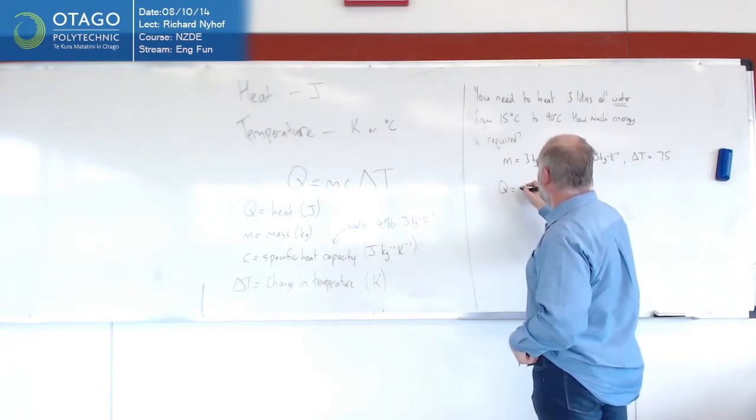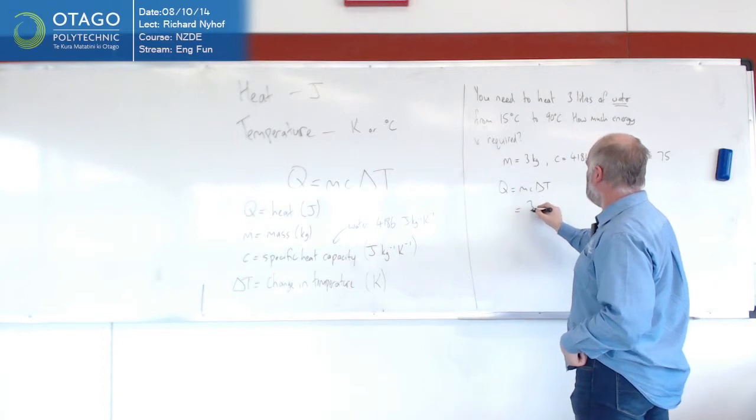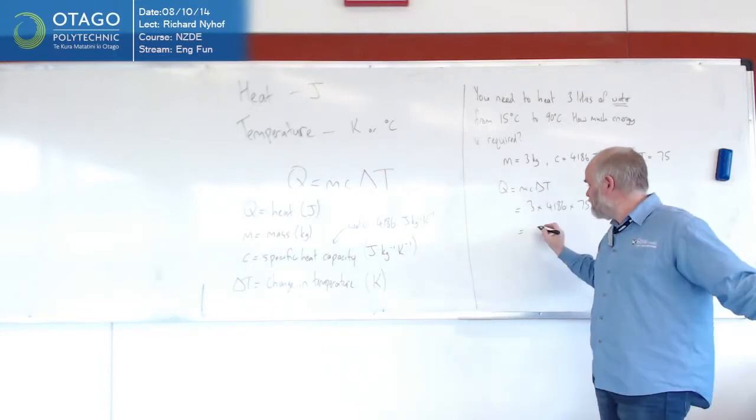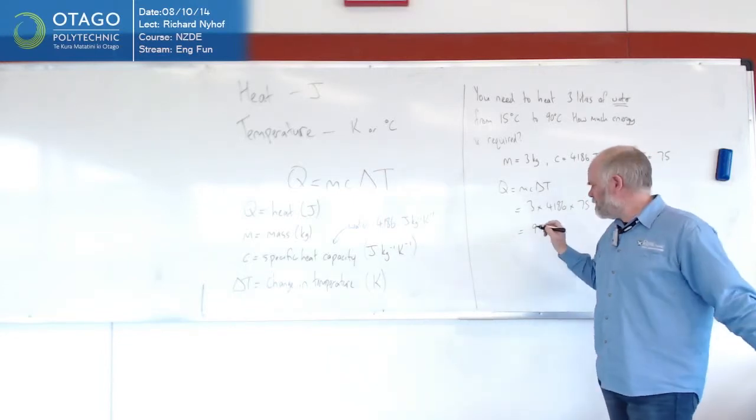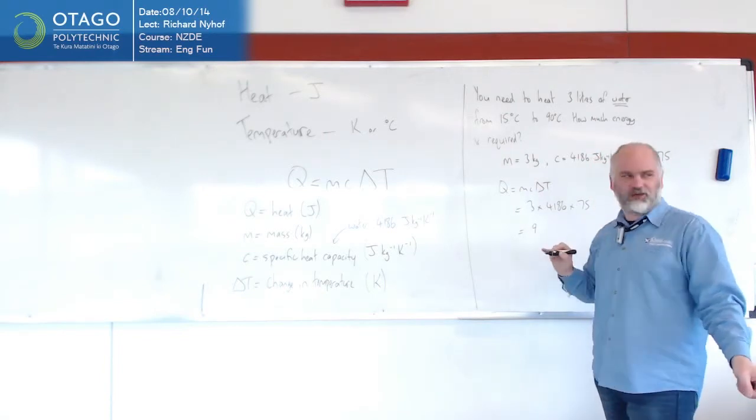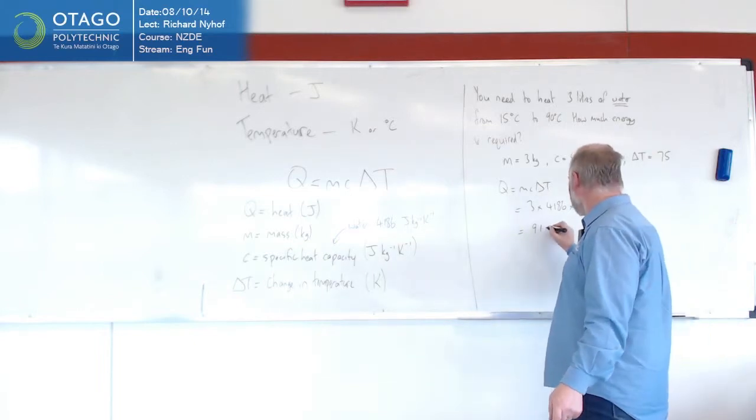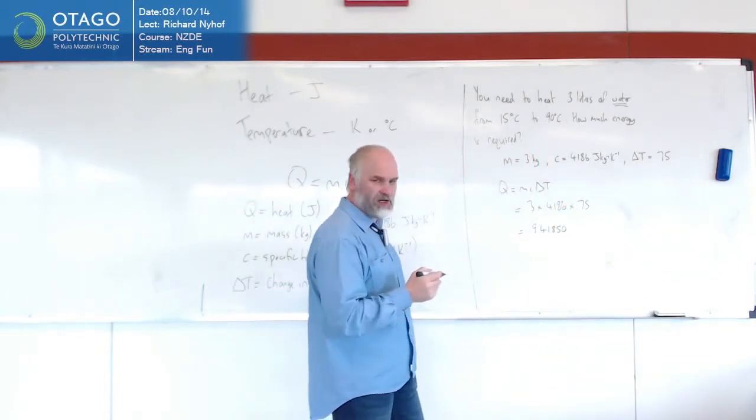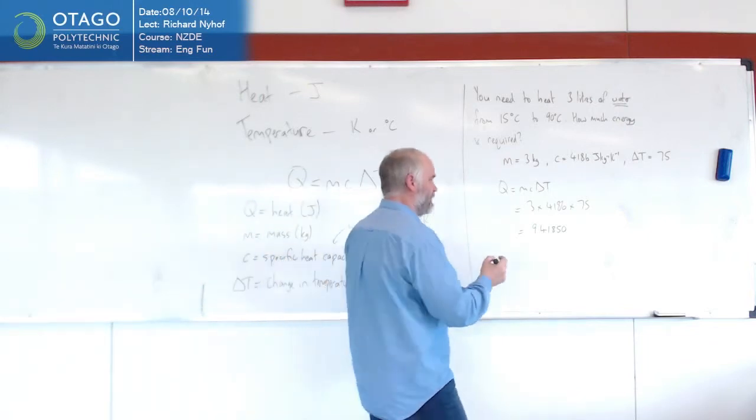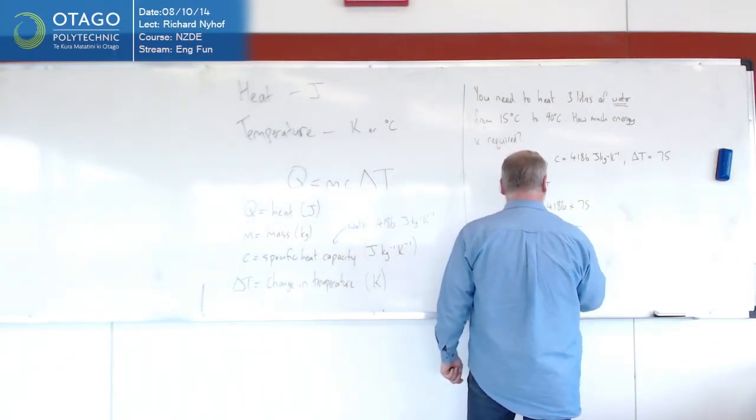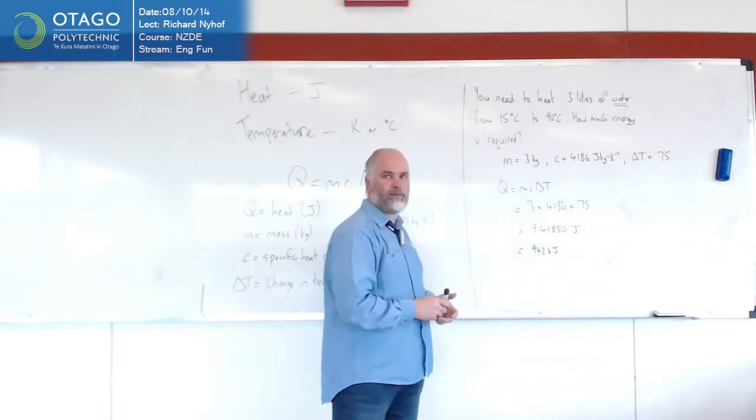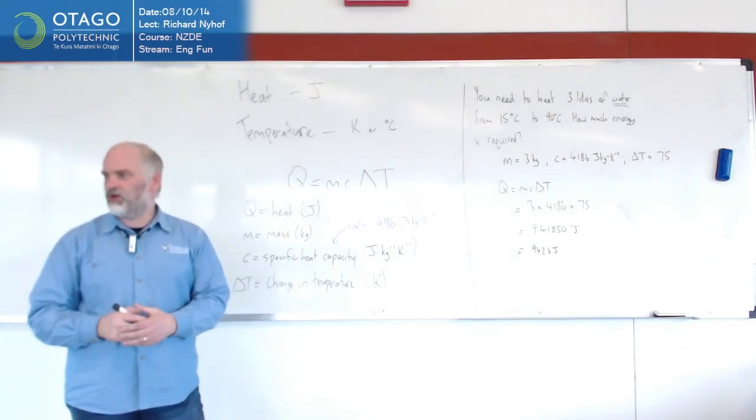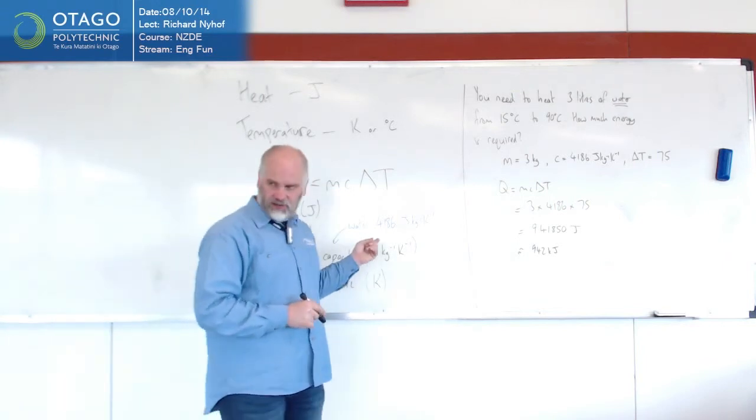Then we use our formula, Q equals MC delta T: 3 times 4186 times 75 equals 941,855 joules. The units for that is going to be joules because it's an energy. So let's say that's about 942 kilojoules, which is a lot. It's 900,000 joules, quite a lot of energy. Water takes a ridiculous amount of energy to heat up.